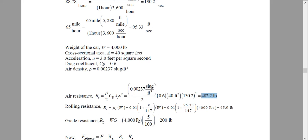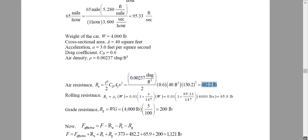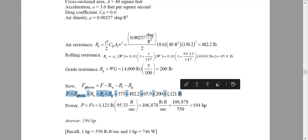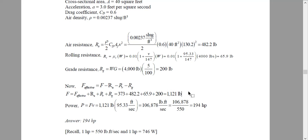Grade resistance is weight times the grade fraction. Since the grade is five percent uphill, it is positive, giving us 200 lb. These three — air resistance, rolling resistance, and grade resistance — are the total resistances. Using F_applied minus resistances equals the effective force, with the effective force calculated as 373 lb, the total applied force required is 1121 lb.